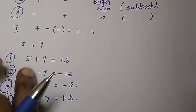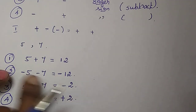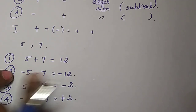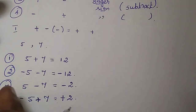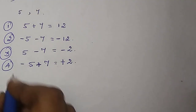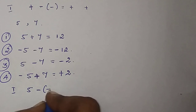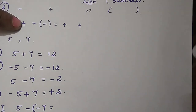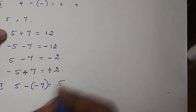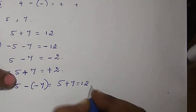These are our four rules. Two positives give plus; two negatives give minus; mixed signs — take the bigger number's sign and subtract. Minus of minus is plus. For example, minus of minus 7 gives plus, so the answer is plus 12.